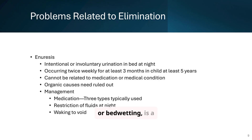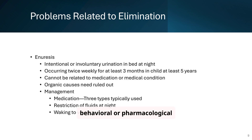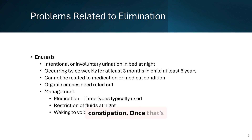Enuresis, or bed wetting, is a common problem in children. It's defined as involuntary urination at night, occurring frequently in children over five. Rule out any underlying medical conditions before considering behavioral or pharmacological interventions. Bed wetting is tough on kids and parents, but it's more common than you think. Before you label it behavioral, rule out physical causes like a UTI, diabetes, or constipation. Once that's clear, you can talk about bladder training, limiting fluids at night, and even bed wetting alarms.